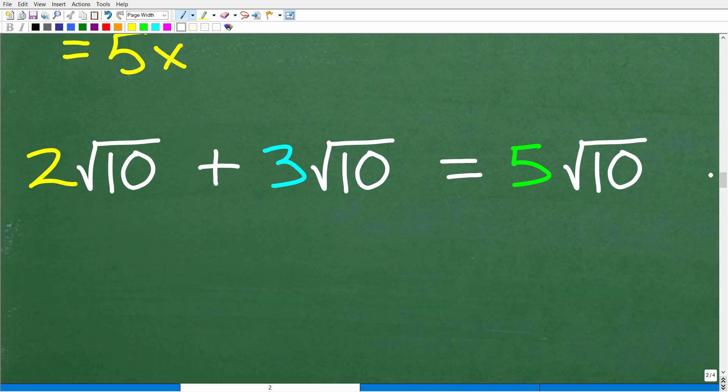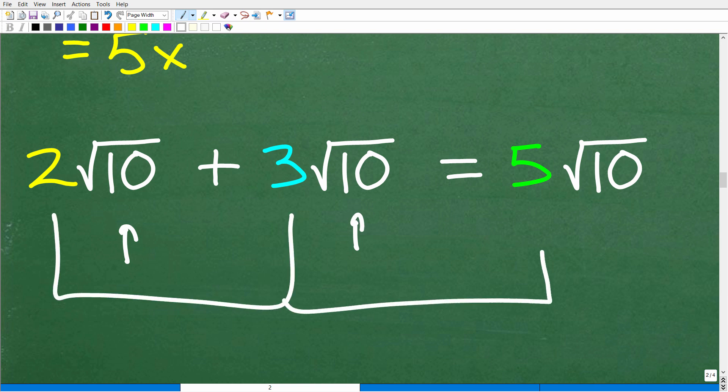So let's go ahead and finish this problem up. Very easy. Once we have these two things simplified, we're like, oh, we can add these because these are both square roots of 10. Look, I have two square roots of 10s over here and three square root of 10s over here. Together, we have five square root of 10s.